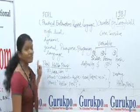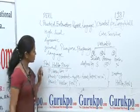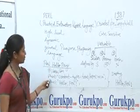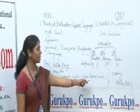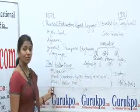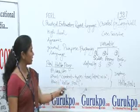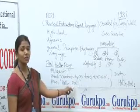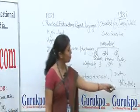Here we can see the hello program, in which we write 'print content type text or html'. In the next line we write 'print hello Perl', and this will display hello Perl.